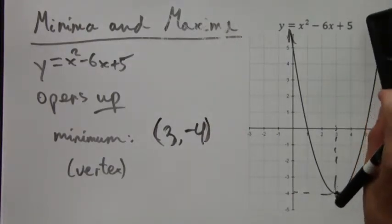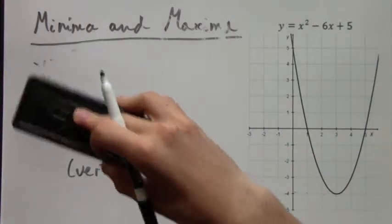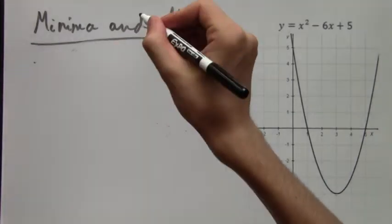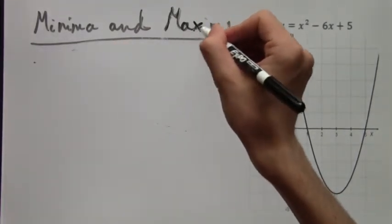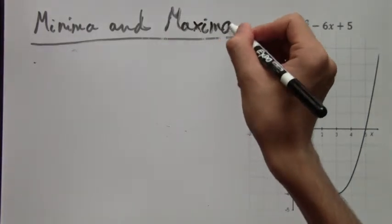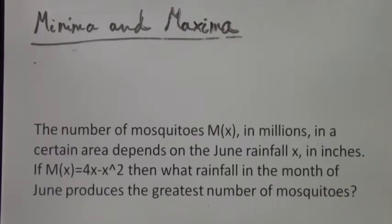So now we're going to do a word problem related to these minima and maxima. More specifically, I'm going to open this word problem up in just a second. Here it is. The number of mosquitoes M(x), in millions, in a certain area depends on the June rainfall x in inches.